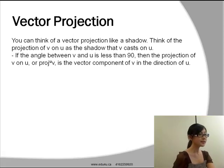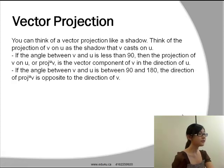If the angle between these two vectors, which are u and v, is less than 90 degrees, then the projection of v on u, or as shorthand it is written this way, is the vector component of v in the direction of u.